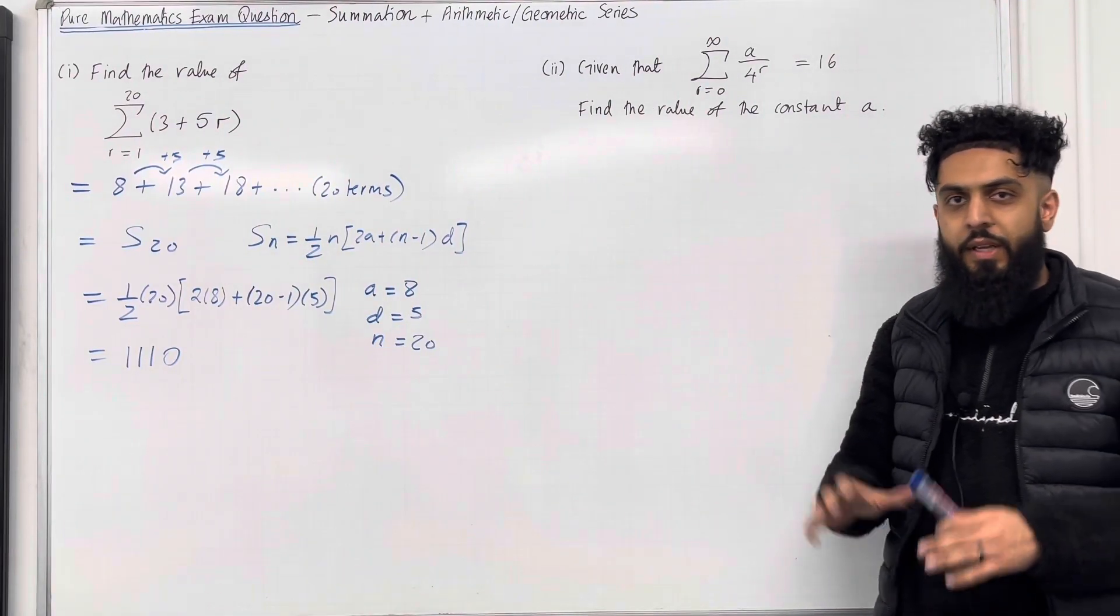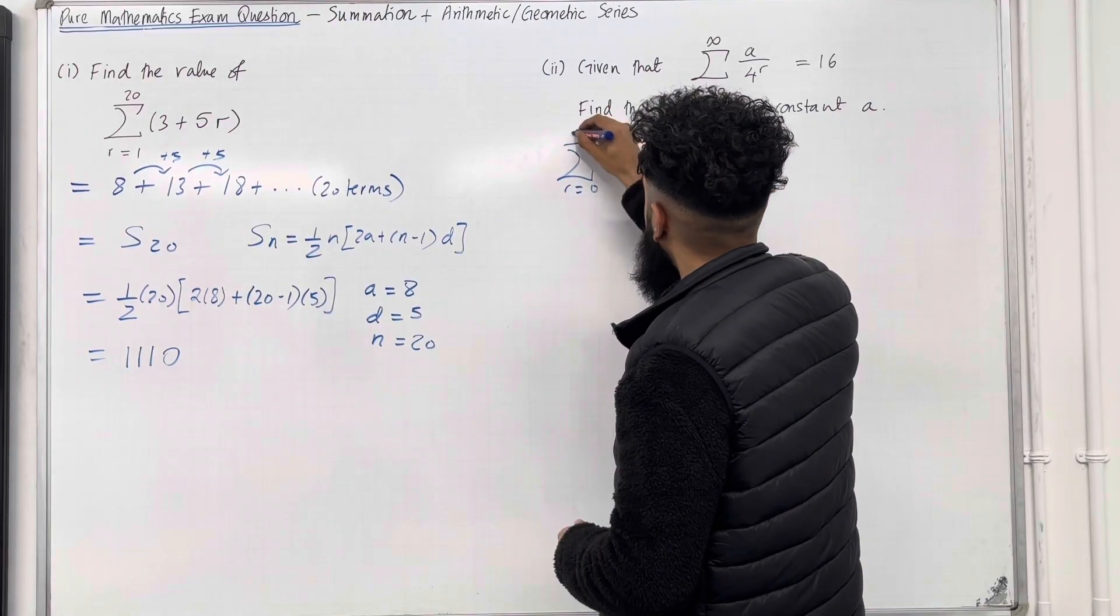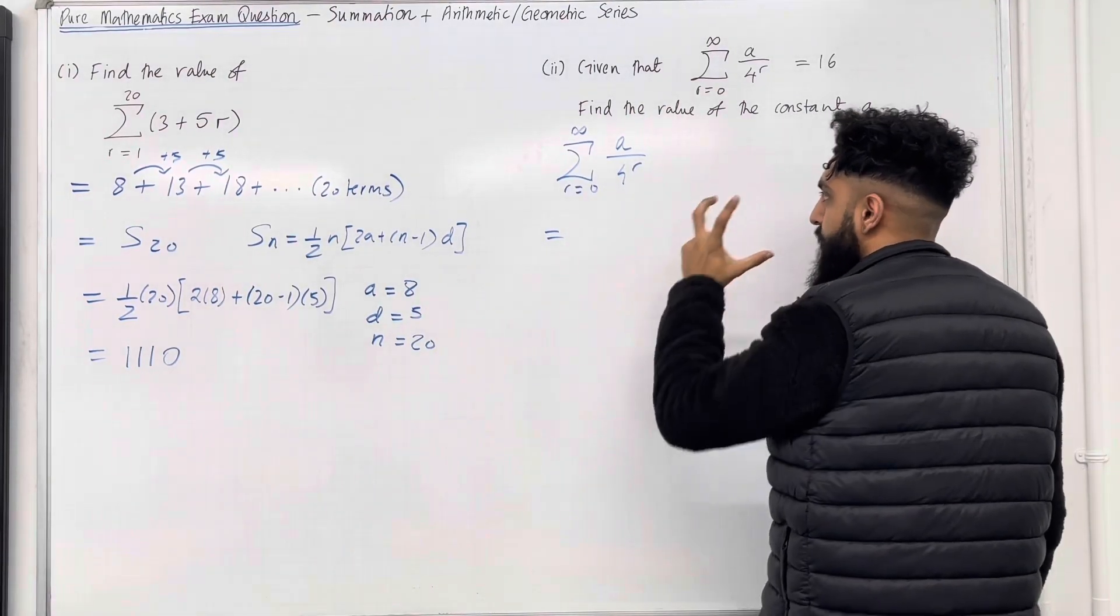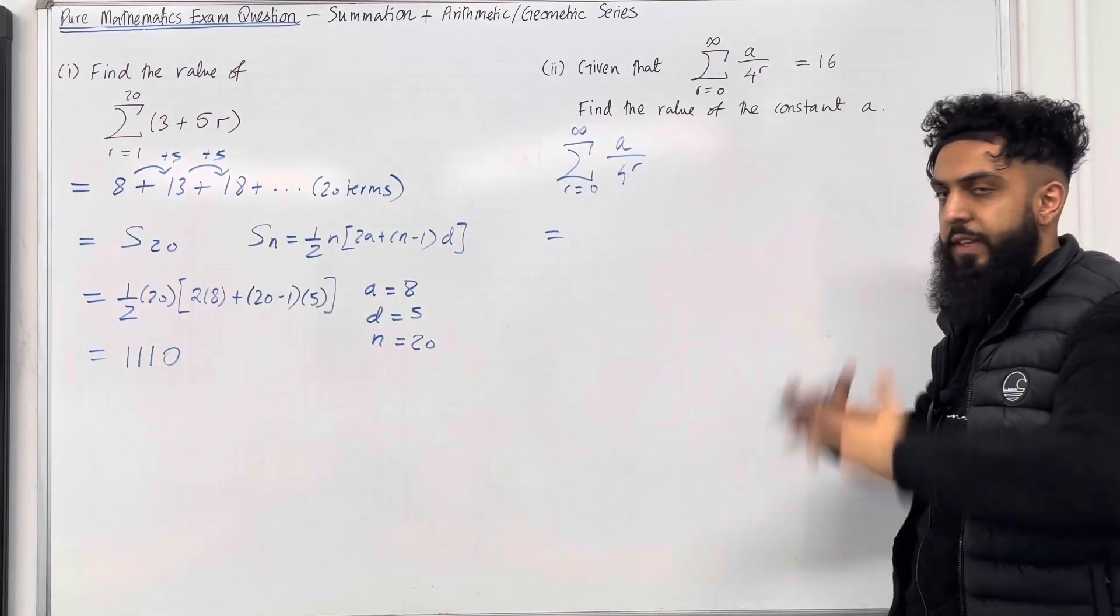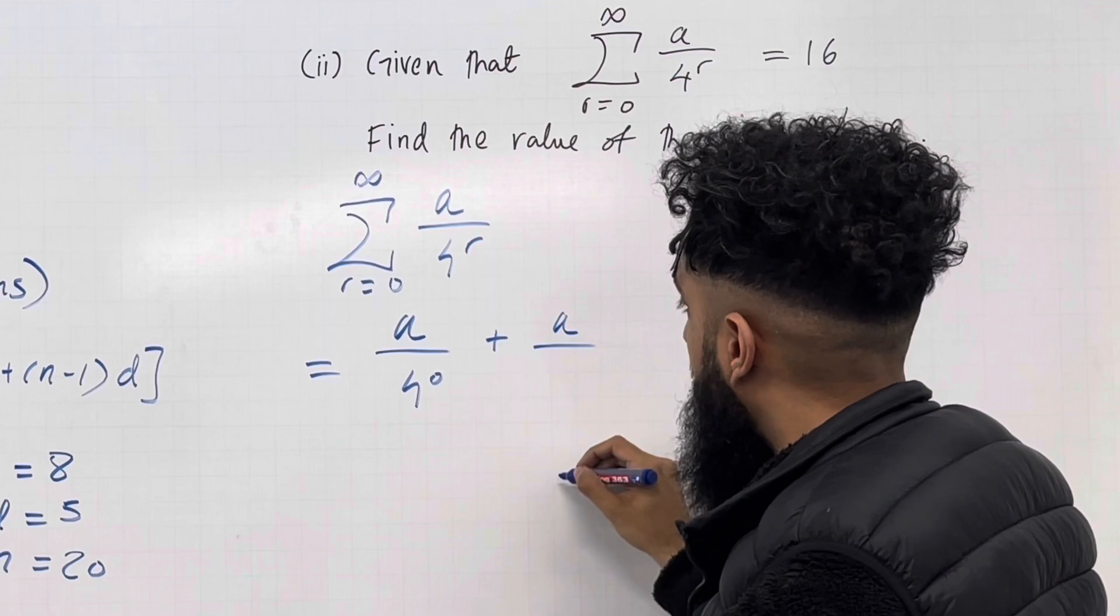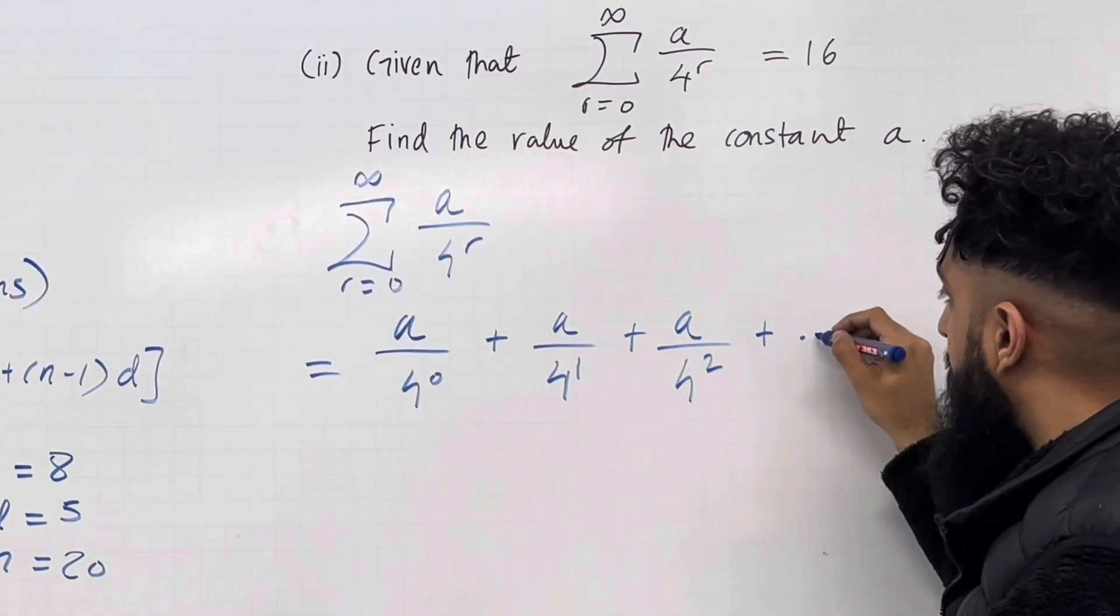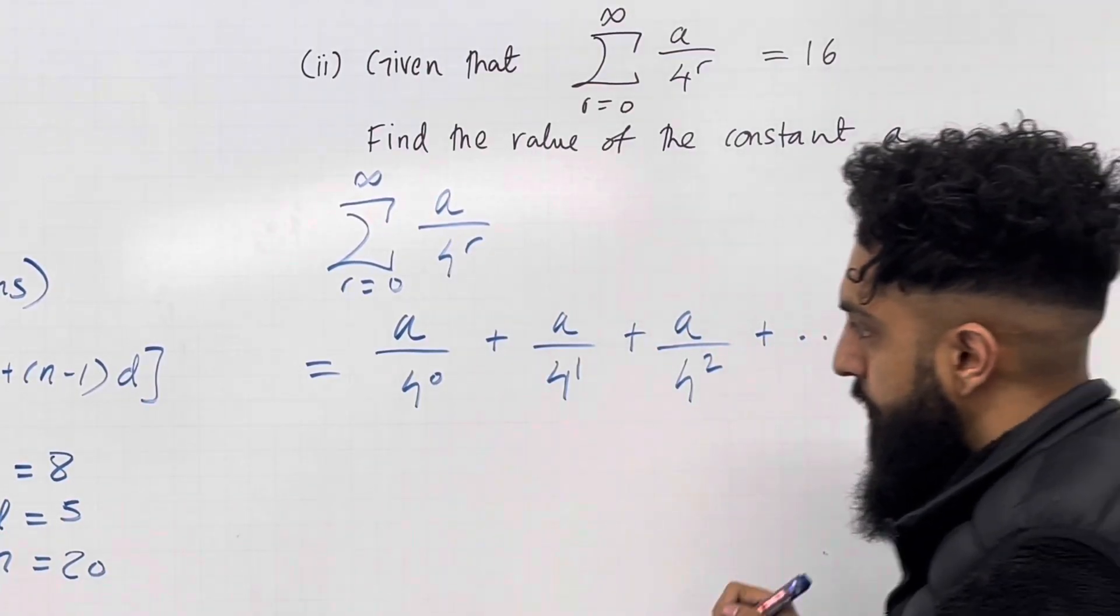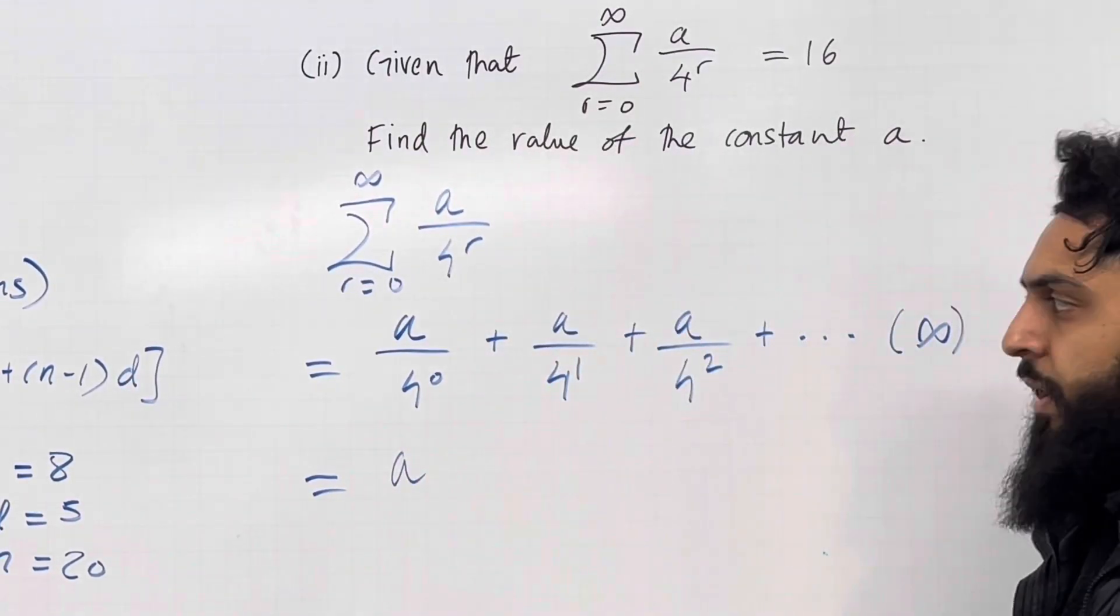Moving on to part 2 of the question. Now, ladies and gents, the first step is to open up this summation. So we've got the sum from r equals 0 to infinity of a over 4 to the power r. Notice that r equals 0 is what we substitute first this time. Previously we had r equals 1. So we substitute r equals 0 in order to get the first term in the series: a over 4 to the power 0. Plus, now we must substitute r equals 1, so a over 4 to the power 1. Then we substitute r equals 2, so a over 4 to the power 2, plus dot dot dot. The upper limit is infinity, so we're summing up to infinity. Right, now, the first term can be rewritten as a. 4 to the power 0 is just 1, so a over 1 is just a.